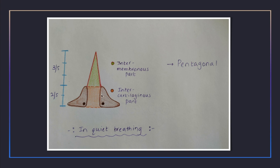The arytenoid cartilages have vocal processes and muscular processes. The medial surfaces, anterolateral surfaces, and posterior surfaces are identified. The cricoarytenoid joint is a synovial joint between the cricoid lamina and base of the arytenoid cartilage, and this joint permits both rotatory movement and gliding movement.